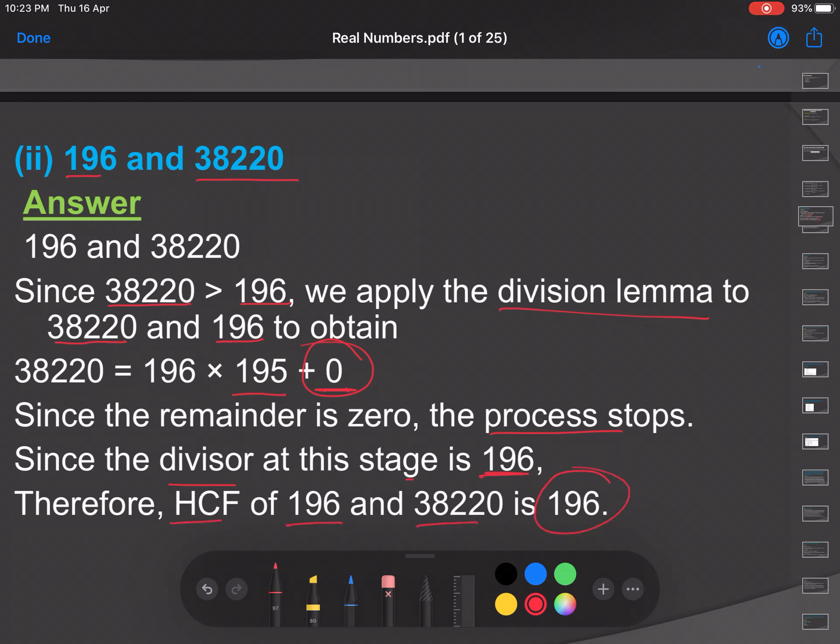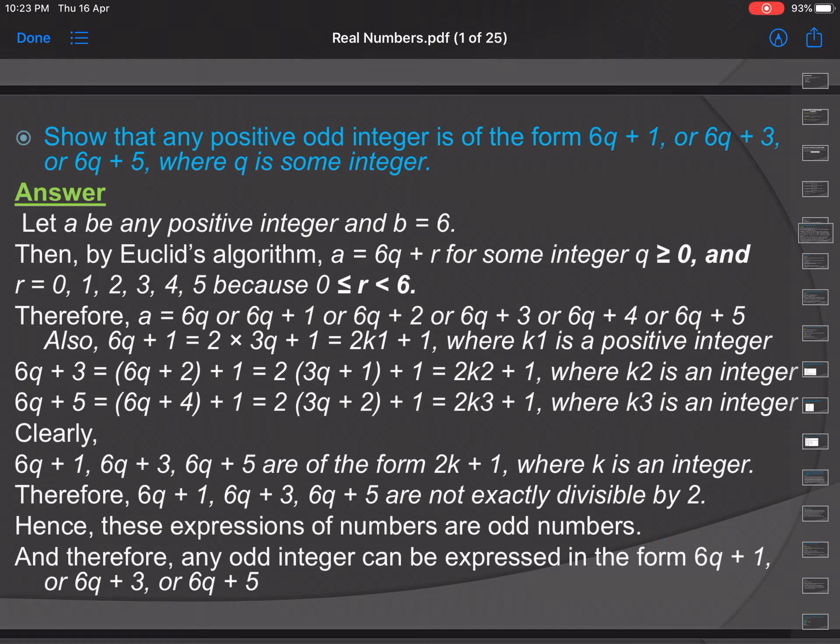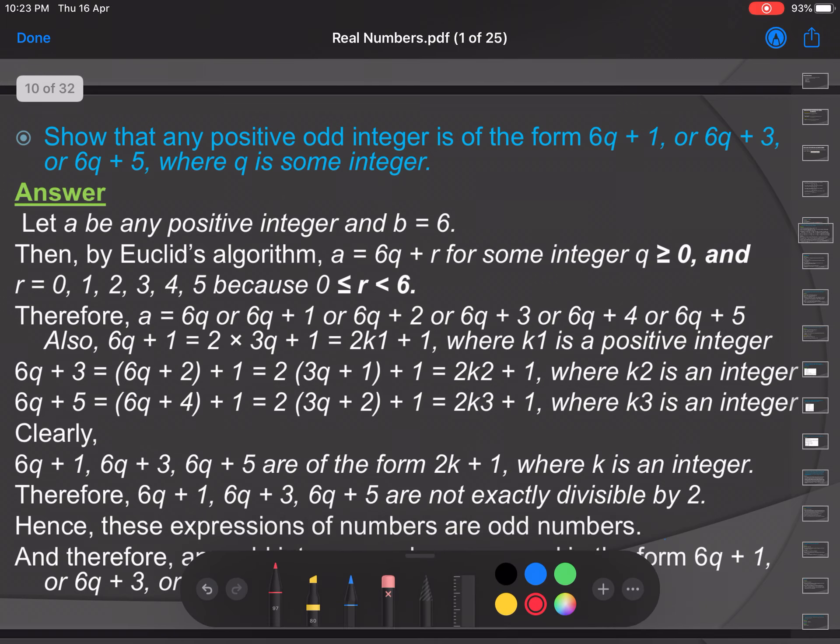Now next example of Euclid division lemma is to prove that any positive odd integer is of the form 6q plus 1 or 6q plus 3 or 6q plus 5 where q is some integer.